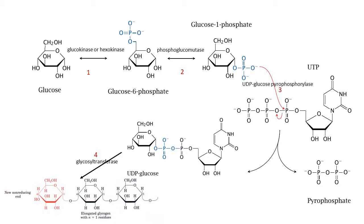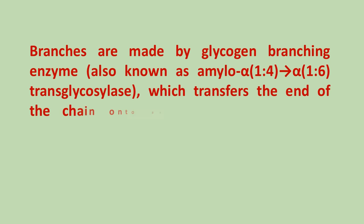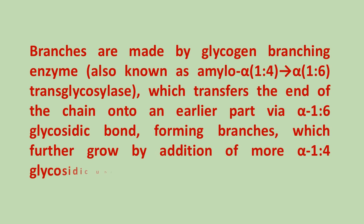Once a chain of 8 glucose monomers is formed, glycogen synthase binds to the growing glycogen chain and adds UDP-glucose to the 4-hydroxyl group of glycosyl residues on the non-reducing end, forming more alpha-1,4 bonds in the process. Branches are made by glycogen branching enzyme, also known as amylo alpha-1,4 to alpha-1,6 transglycosylase, which transfers the end of the chain onto an earlier part via an alpha-1,6 glycosidic bond, forming branches that further grow by addition of more alpha-1,4 glycosidic units.